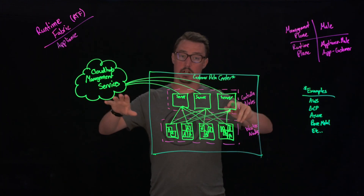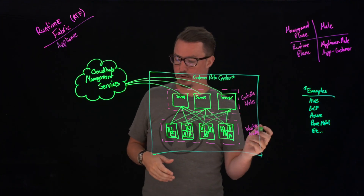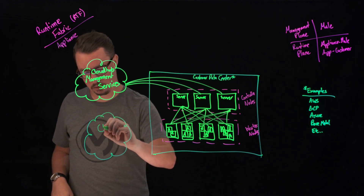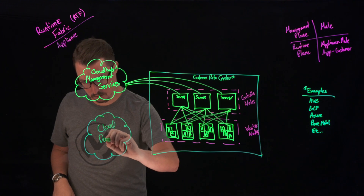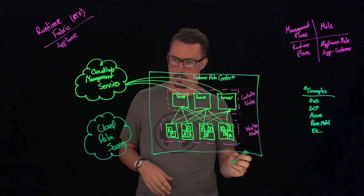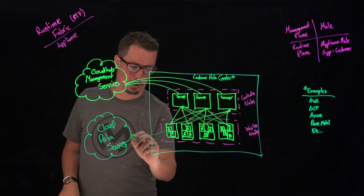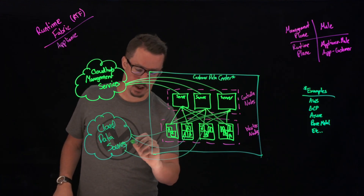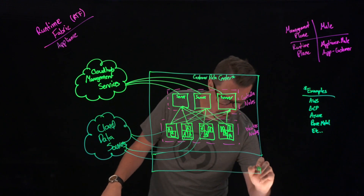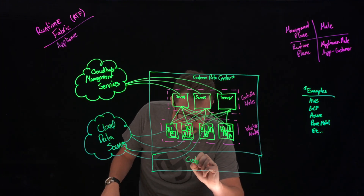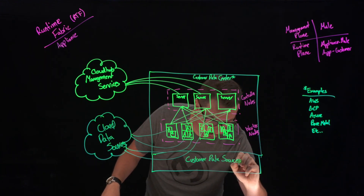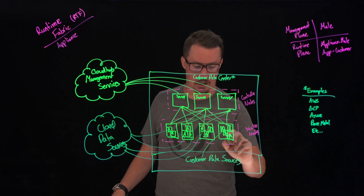Now we have our applications running, but we don't really have them connected up to any data sources. We might have some cloud data sources, and essentially these would be able to be connected up to these individual applications. Not everything is going to be connected to the cloud — some might have multiple connections, some might not reach out at all — but we're also going to have customer data sources, and these individual applications might need to connect down to those as well.